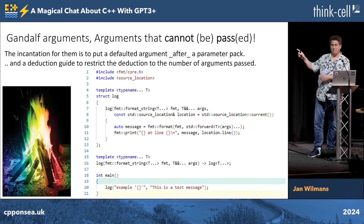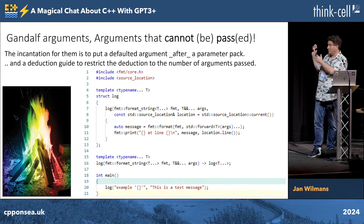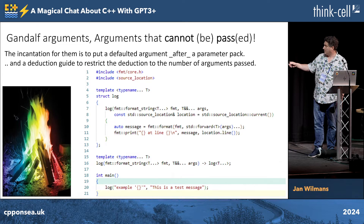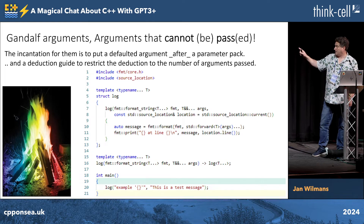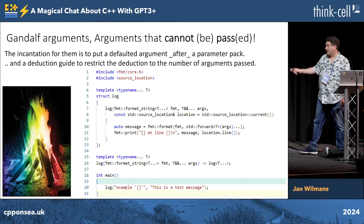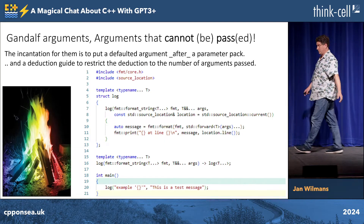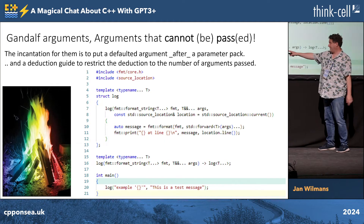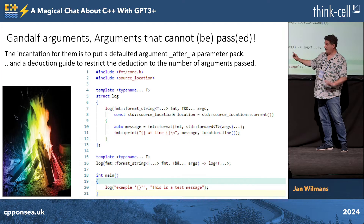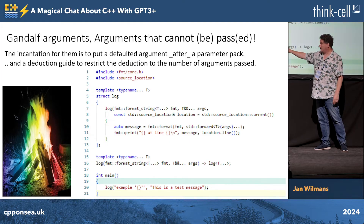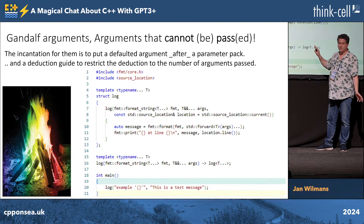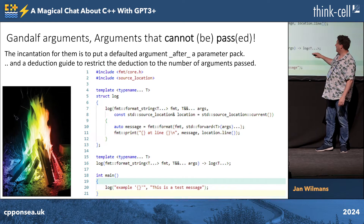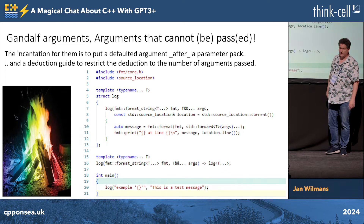Usually you can't put anything beyond the last variable argument pack, but actually you can, if you add this deduction guide at the bottom. Then it determines — well, I don't know exactly how this works — but it determines the amount of arguments, and then decides that's the exact amount of arguments to pass to this function, and then adds the source location at the end.